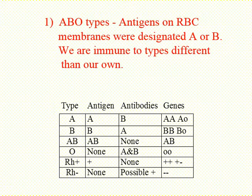When we type your blood — we're typing it in lab today — and we say you're type A, we don't know if you're AA or AO. We just know that you're type A, same with B. Because these blood types are inherited, this was the very first test available when paternity testing was done.